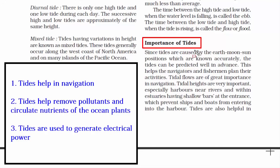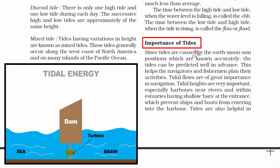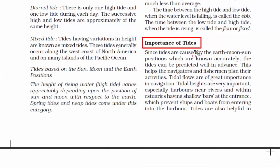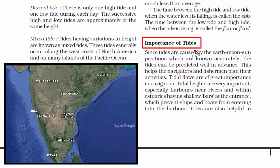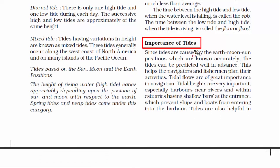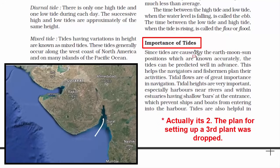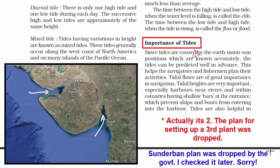The third advantage: tides are used to generate electrical power — tidal energy, classified as a renewable resource. Turbines placed below the water surface are moved by water currents, activating a generator that produces electricity. Countries like South Korea, UK, Canada, France, Russia and China have the world's biggest tidal power plants. In India, tidal energy is harnessed at the Gulf of Khambat, Gulf of Kutch and Gangetic Delta in Sundarbans.